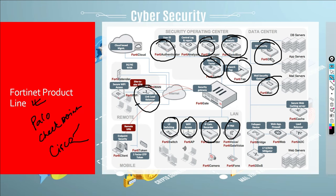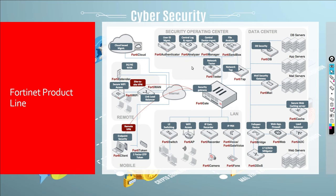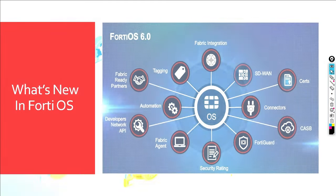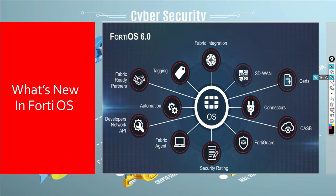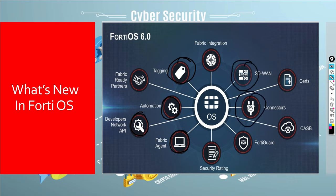Now moving to FortiOS 6.0 — there are a lot of new things in it. You get API automation, Fabric Agent, tagging, SD-WAN connector, FortiGuard, and much more, all within a single OS. They have enabled a lot of features, and we'll see in upcoming videos how it performs.